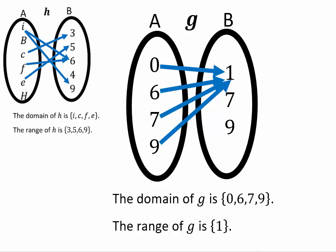Now, assuming you've come back, let's see what answers you got and compare to what I have. The domain of this function g would be 0, 6, 7, 9 and the range would be just 1, since all the elements are connected to 1.